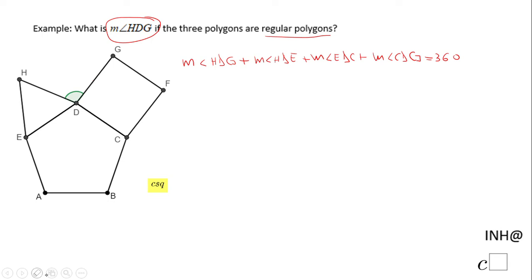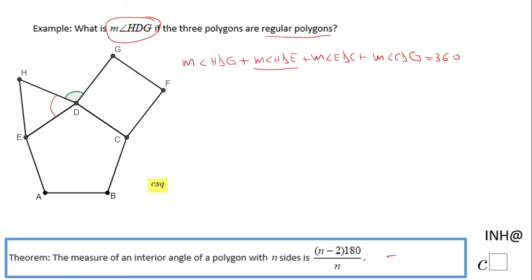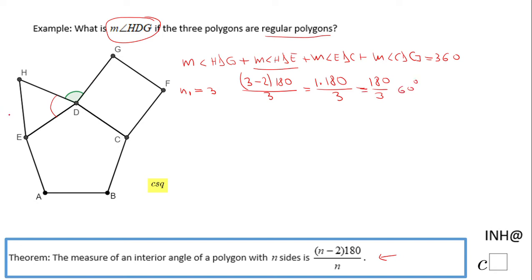Now we need to find each of these angles. I'm going to start with angle HDE. That angle is an interior angle of this regular polygon with three sides — or an equilateral triangle. Using the interior angle formula with n₁ = 3: (3 − 2) × 180 ÷ 3 = 1 × 180 ÷ 3 = 180 ÷ 3 = 60 degrees. This angle is 60 degrees.